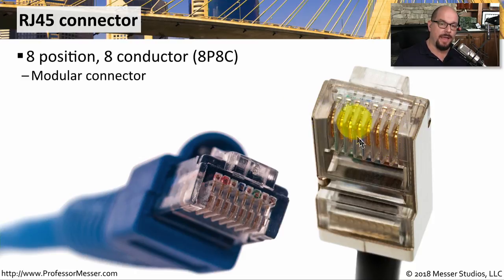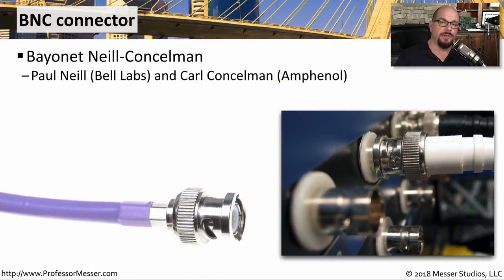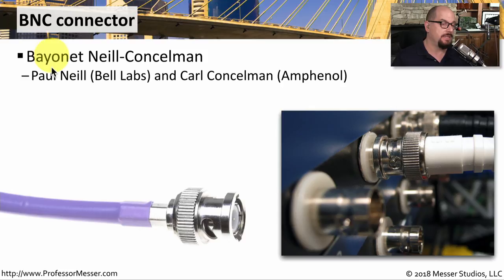You can see all eight of those conductors are in use. If you're connecting an ethernet network over copper, then you're using an RJ45 connector. A bayonet connector is one that you push in and twist to lock into place.